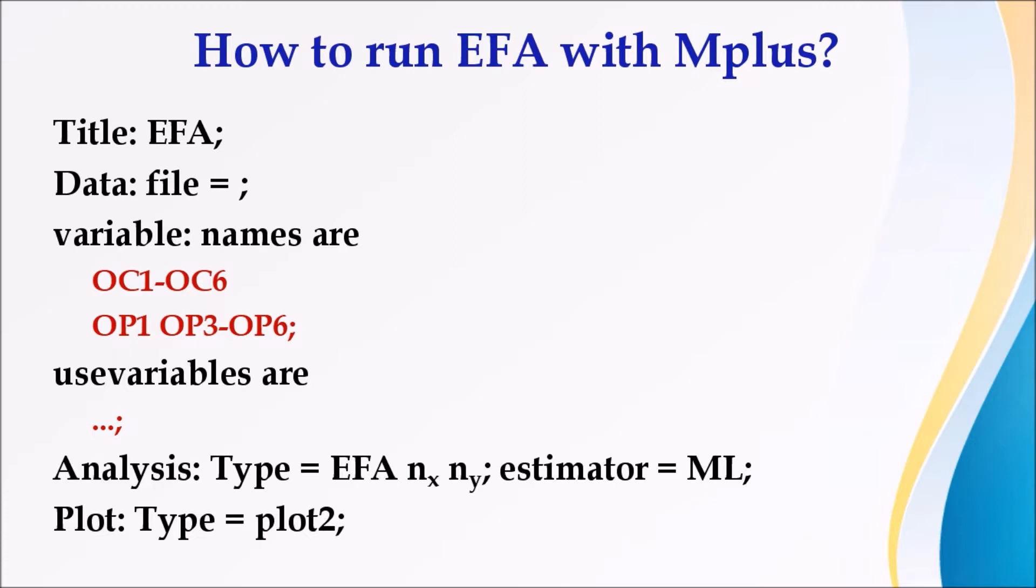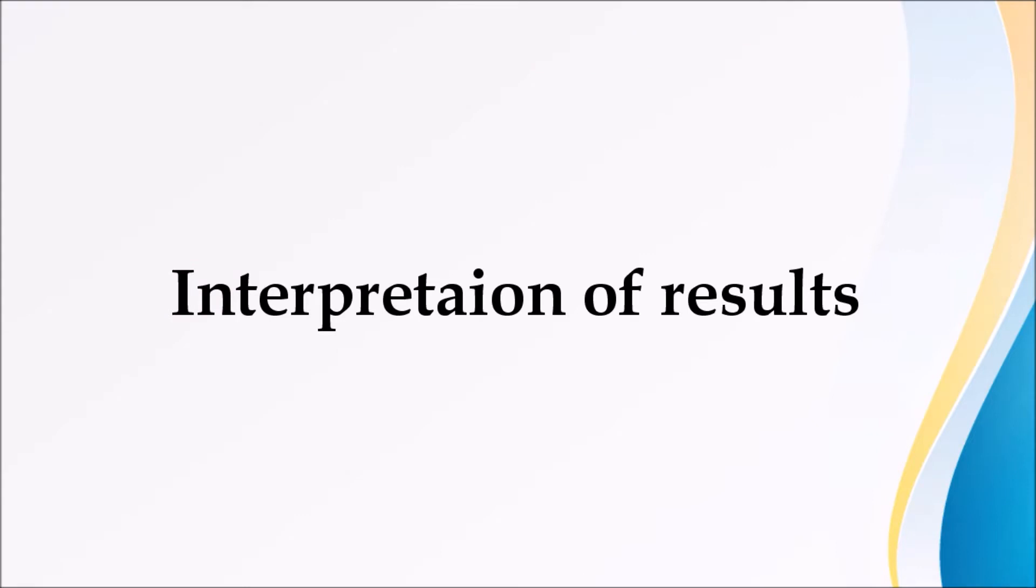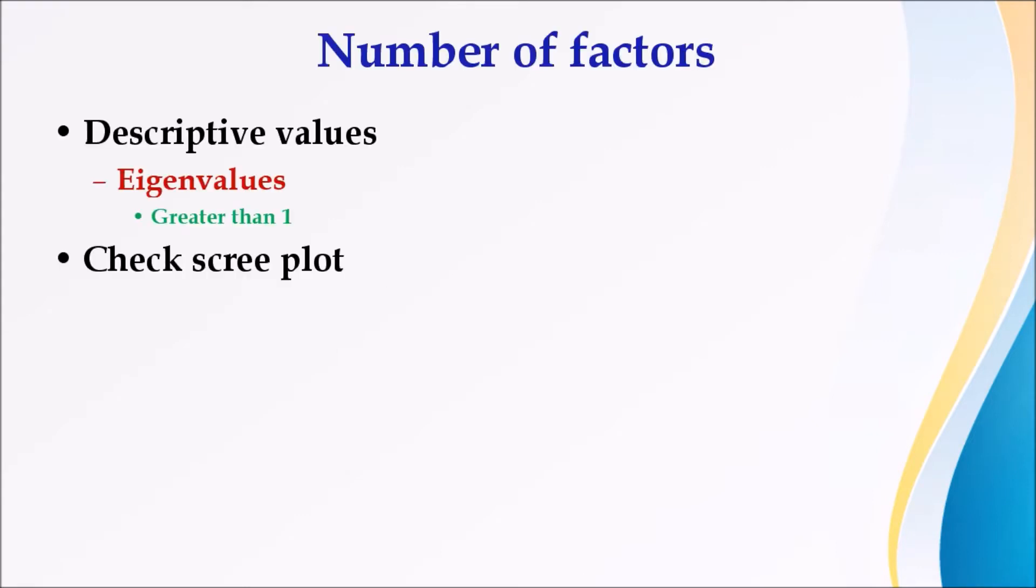Now coming to interpretation of the results. The first one is the number of factors: how many number of factors are appropriate? Two things you have to keep in mind. The first one is the eigenvalue. You can expect a number of factors having eigenvalue greater than one. Second one is the fit indices. Scree plot can also help you in selecting the appropriate number of factors.